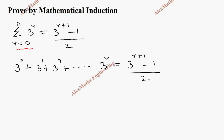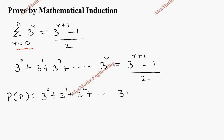Since our series starts from r equal to 0, we take P of 0. But before that, let's write the series in terms of n. So P of n is: 3 power 0 plus 3 power 1 plus 3 power 2 plus dot dot dot till 3 power n, and the other side is 3 power n plus 1 minus 1 by 2.